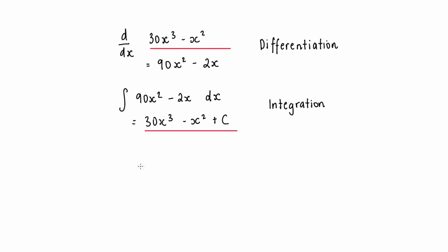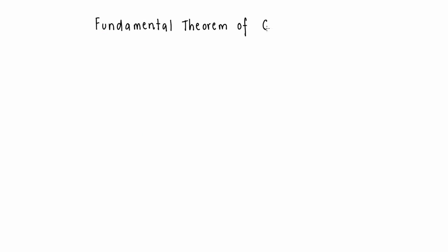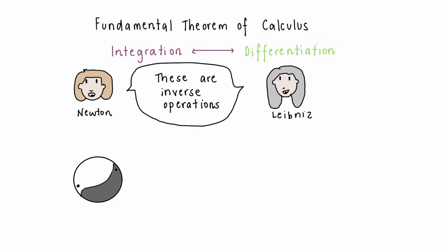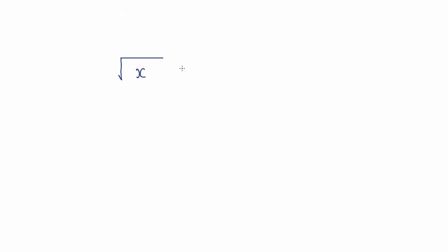If we differentiate a function and then integrate it, it will always take us back to where we started. Both these branches, differentiation and integration, are connected together by something called the fundamental theorem of calculus. This theorem, created by Newton and Leibniz, states that differentiation and integration are inverse operations or opposites, just like yin and yang, black and white, or matter and anti-matter. Take the square root, for instance. The opposite of taking the square root is squaring a number, just like differentiation is the opposite or inverse of integration.